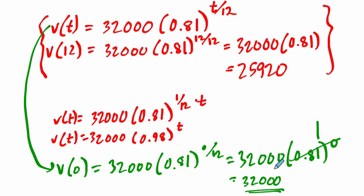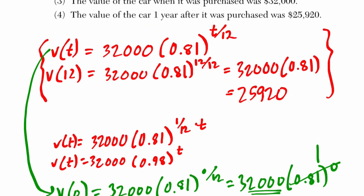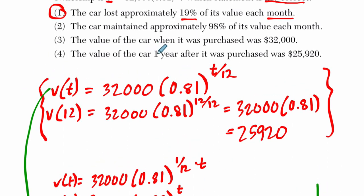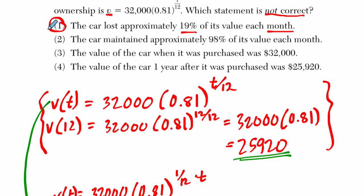If you plug in zero, you'll always see that number in the front. An exponential function, that's the starting value of whatever you're dealing with. The value of the car one year after its purchase was $25,920. We confirm that here. So other than identifying what's actually the answer here, it's important to do a little bit of work with the problem so you're actually able to analyze the other choices they're giving you and understand where they're getting all those numbers from. I hope this helped.